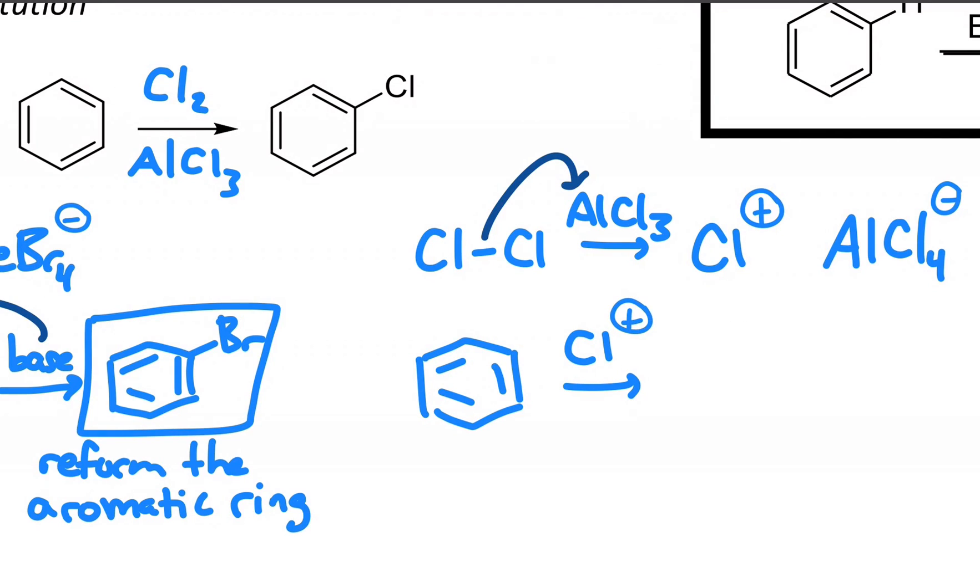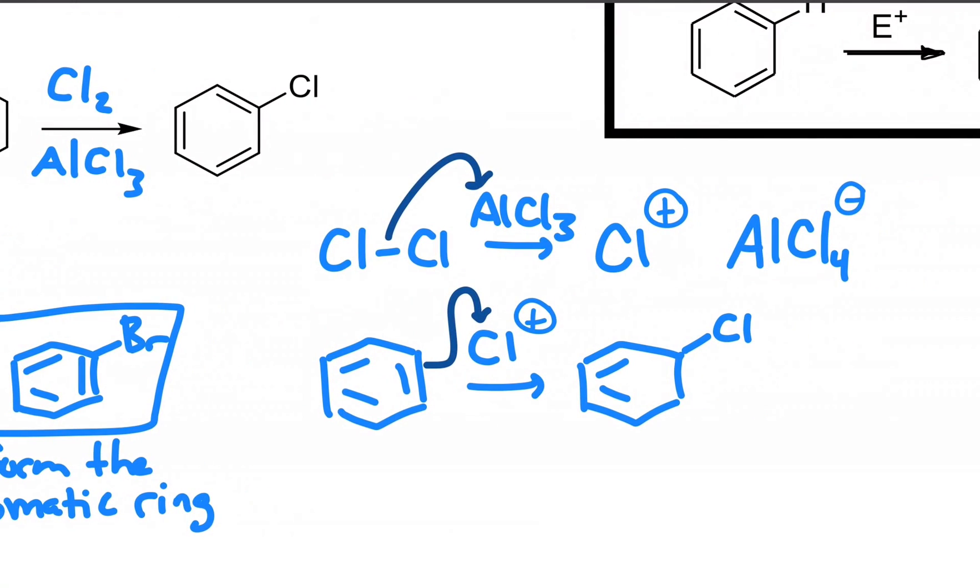That's electrophilic enough to break the pi system, form the beginning of an addition product, but it doesn't undergo addition. Instead, you will get a substitution and reform that pi bond in the same style as we saw with bromination.